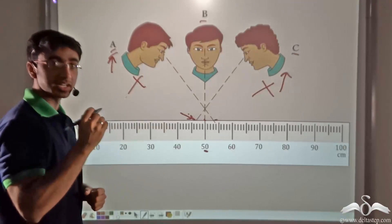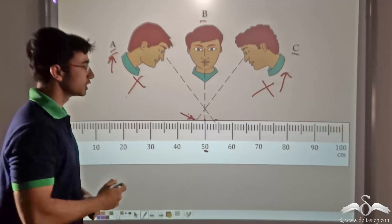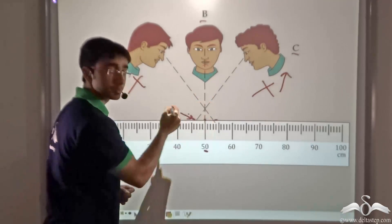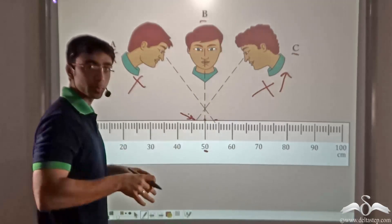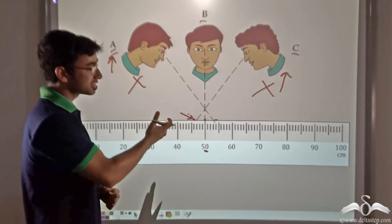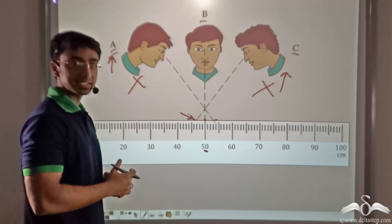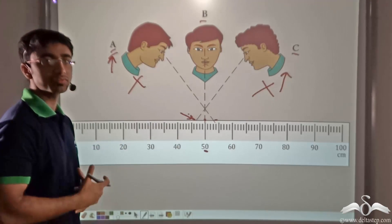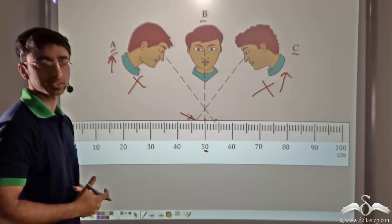If you have to obtain an accurate reading, you have to view it absolutely from the top of where you are measuring. This is how we use a meter scale in order to measure lengths of different objects. Thank you very much.